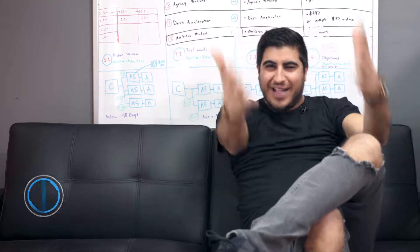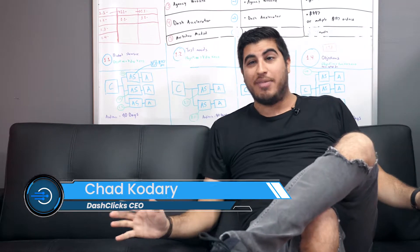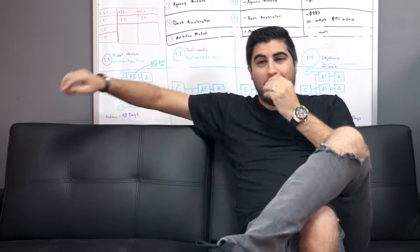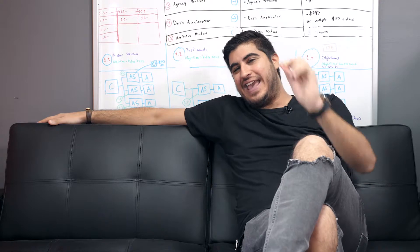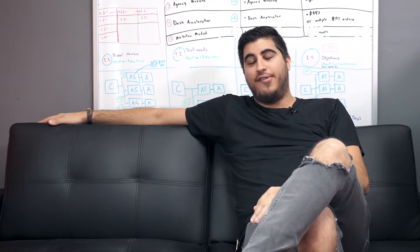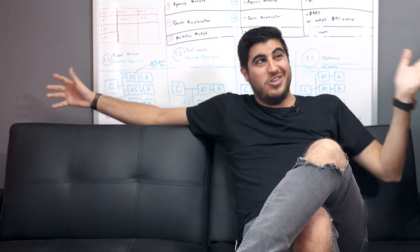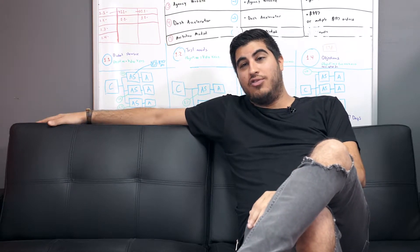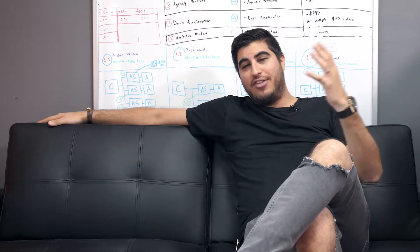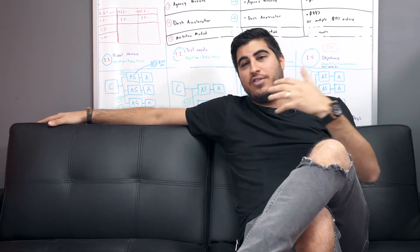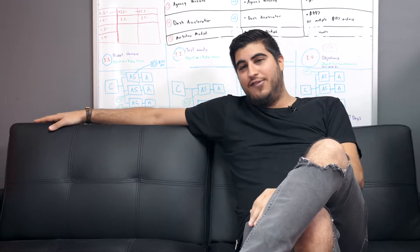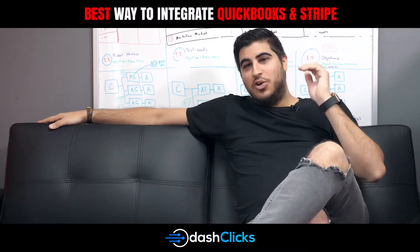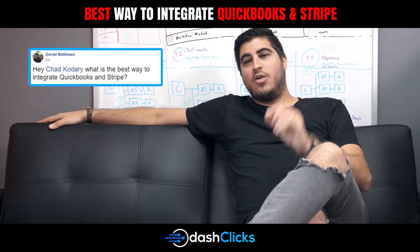Here we go, we're going live right now. This might be the intro to the Q&A — we're gonna do something a little different. Beatrice, our video producer, has taken a bunch of questions from our Facebook page, and we just set up a couch in the studio for a chill little Q&A session. I'll be answering questions you guys have been asking inside the Facebook page. So here we go — Daniel Matthews asks: what is the best way to integrate QuickBooks and Stripe?